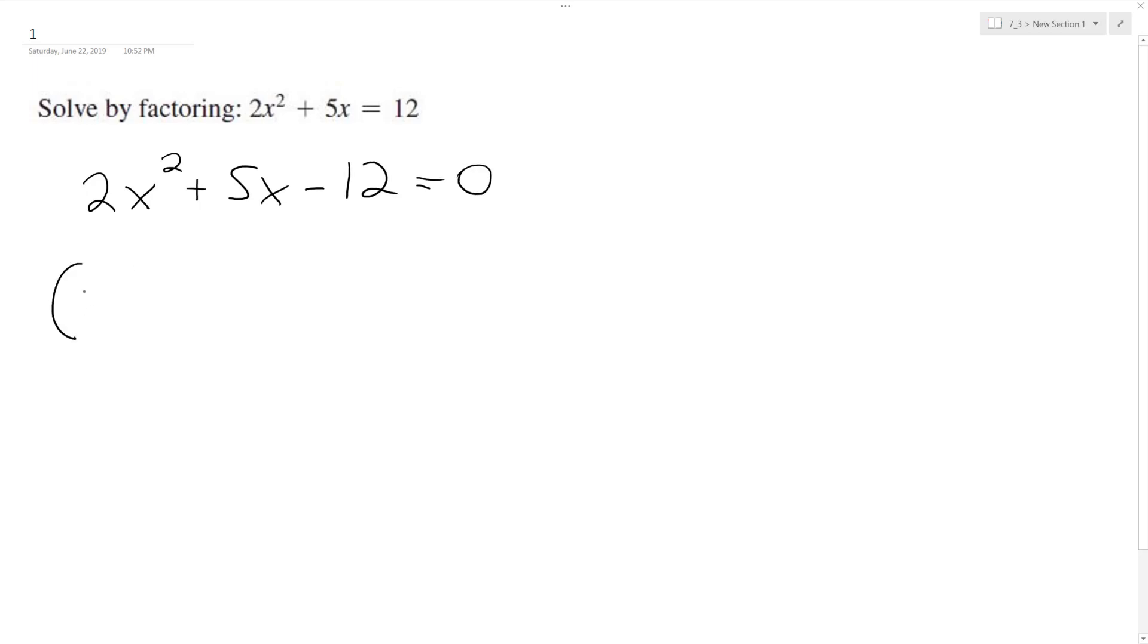So I do know that this is going to be factored as a 2x and an x. So I need to think, I'm going to have a minus term and a plus term. And I need to think what, so multiply together, it's either going to be like a 6 and a 2, or a 3 and a 4 likely.